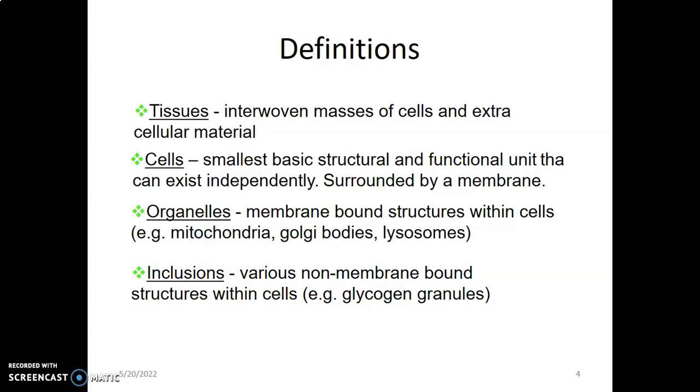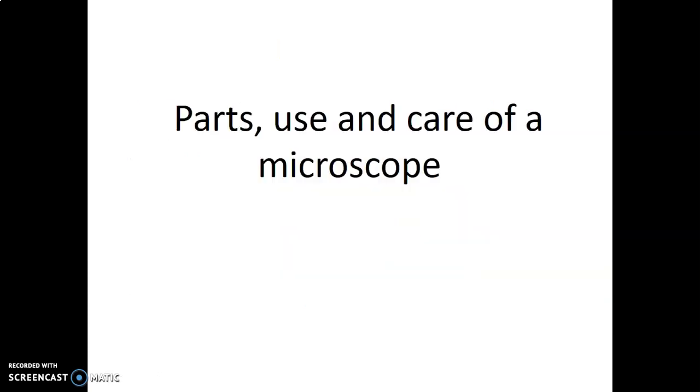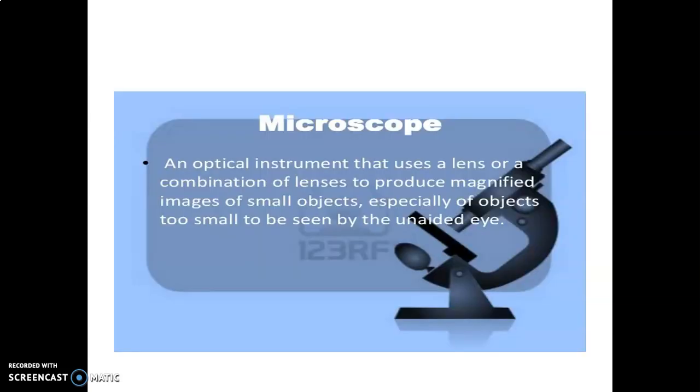Organelles are just membrane-bound structures within the cell, so it could be mitochondria, the Golgi bodies, lysosomes. Inclusions, on the other hand, are non-membrane-bound structures. A good example is glycogen granules.